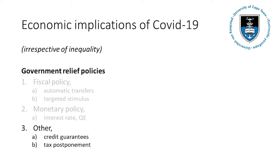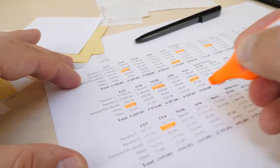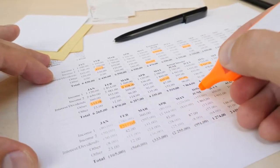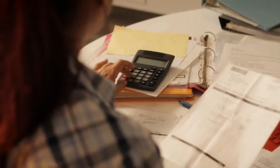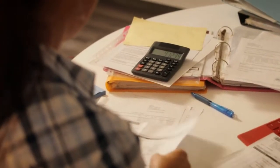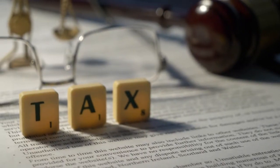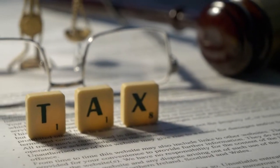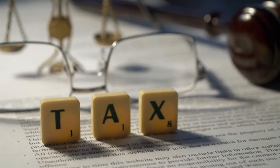Finally, there are other regulatory measures that do not directly cost the government money. Think about the government providing loan guarantees, which only become costly if these businesses go out of business, or letting companies postpone their tax payments. This really helps those companies who are short on cash now, but it doesn't mean that their taxes will not be paid after the pandemic is over.